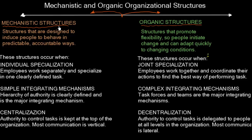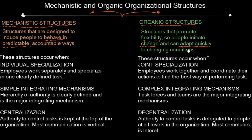So we have mechanistic structures — these are structures designed to induce people to behave in predictable and accountable ways. On the other hand, we have organic structures — these are structures that promote flexibility, so people initiate change and can adapt quickly to changing conditions.